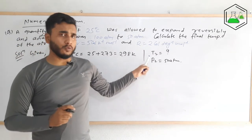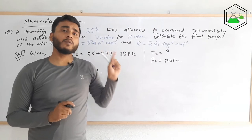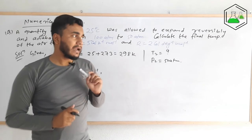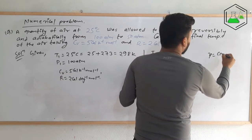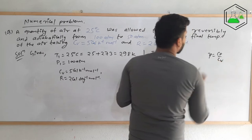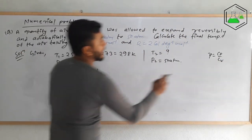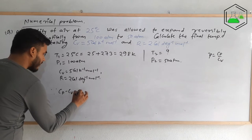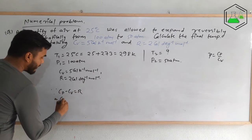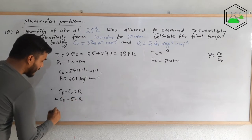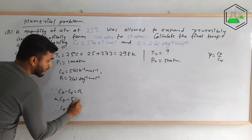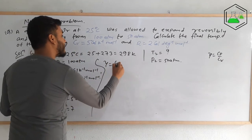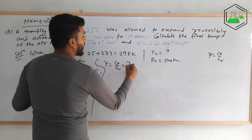To get T2, we use the formula T1^γ · p1^(1−γ) = T2^γ · p2^(1−γ). For that, we first need to find γ. We know cp − cv = R, so cp = cv + R = 5 + 2 = 7 cal/K/mol. Therefore γ = cp/cv = 7/5 = 1.4, which indicates we are dealing with a diatomic molecule.